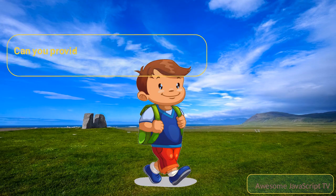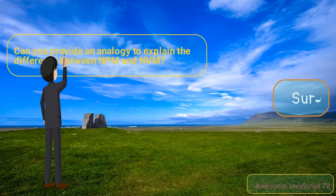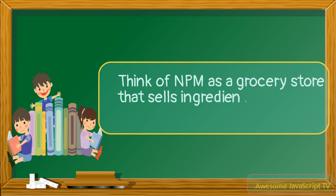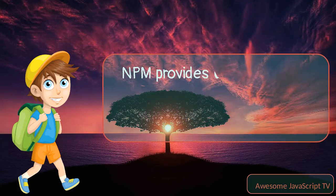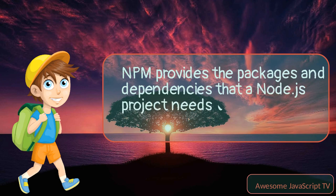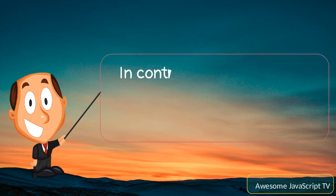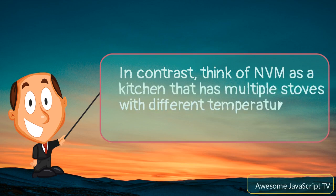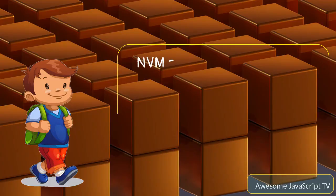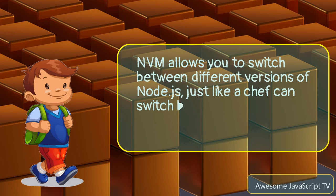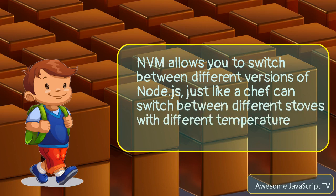Can you provide an analogy to explain the difference between NPM and NVM? Sure. Think of NPM as a grocery store that sells ingredients for a recipe — it provides the packages and dependencies that a Node.js project needs to function properly. In contrast, think of NVM as a kitchen that has multiple stoves with different temperature settings. NVM allows you to switch between different versions of Node.js, just like a chef can switch between different stoves with different temperatures to cook different dishes.